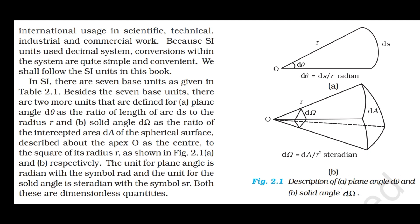In SI, there are seven base units as given in Table 2.1. Besides the seven base units, there are two more units defined: the plane angle Dθ as the ratio of length of the arc ds to the radius, and the solid angle Dσ as the ratio of intercepted area dA of the spherical surface to the square of the radius R, as shown in figure 2.1. The unit for plane angle is radian (symbol: rad) and the unit for solid angle is steradian (symbol: sr). Both these quantities are dimensionless.